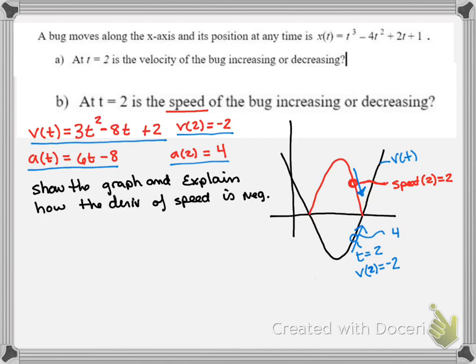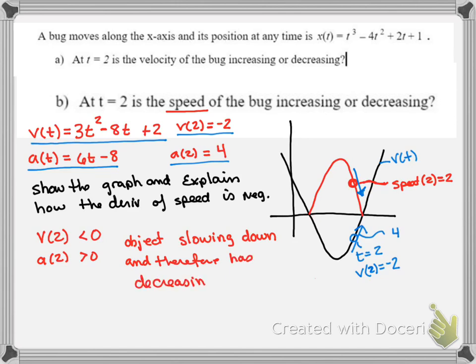Or better yet, we would recognize that velocity less than 0, acceleration greater than 0, means that our object is slowing down and therefore has decreasing speed.